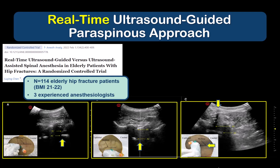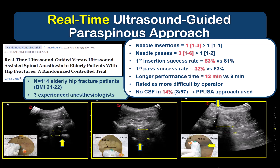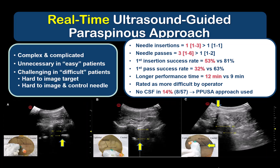I'll end with a comment on real-time ultrasound-guided spinal anesthesia. This has been described with a variety of different approaches, nicely illustrated in this article. I will say that I've used it myself on a few occasions. However, note that this randomized controlled trial, which compared pre-procedural ultrasound imaging and real-time ultrasound-guided spinal anesthesia — both using a paraspinous approach — found that the real-time ultrasound-guided technique was significantly more difficult, resulting in more needle insertion attempts, lower first-pass success rates, and longer block performance time, even in the hands of three experienced anesthesiologists.